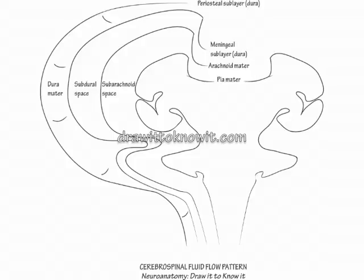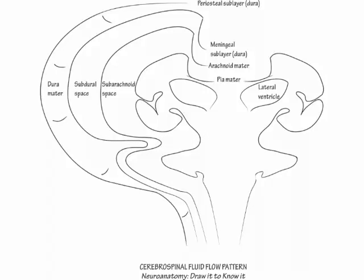Cerebrospinal fluid originates within the ventricles. To show a T-shaped coronal view of the ventricular system, first draw the paired lateral ventricles at its top. Draw choroid plexus within them.